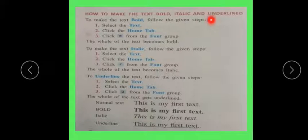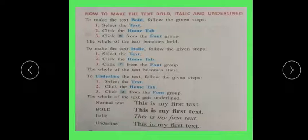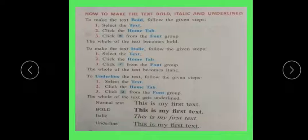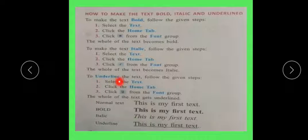How to make the text bold, italic, and underlined. To make the text bold, follow the given steps: select the text, click the Home tab, and click Bold. The whole text becomes bold. The whole text becomes italic — for example, 'This is my first text' will change to italic.